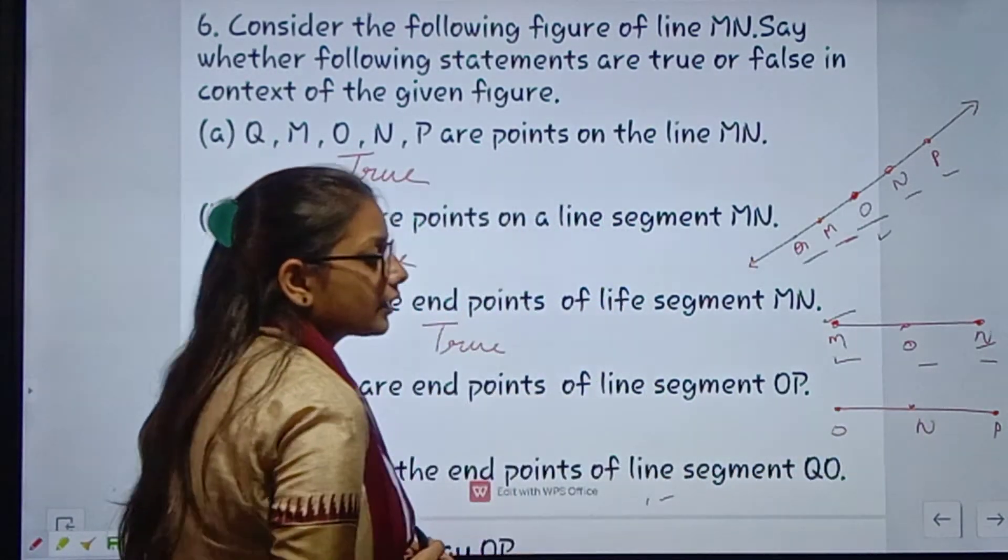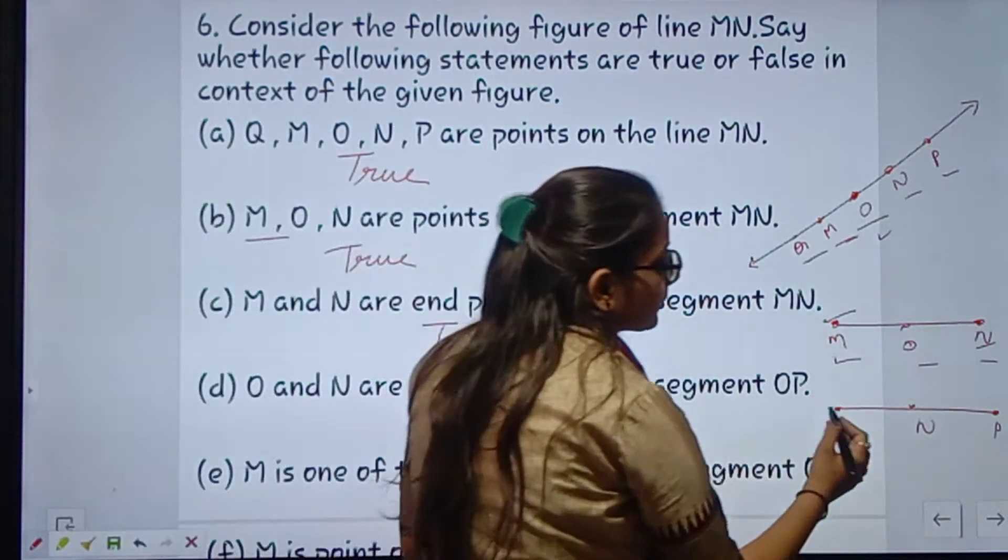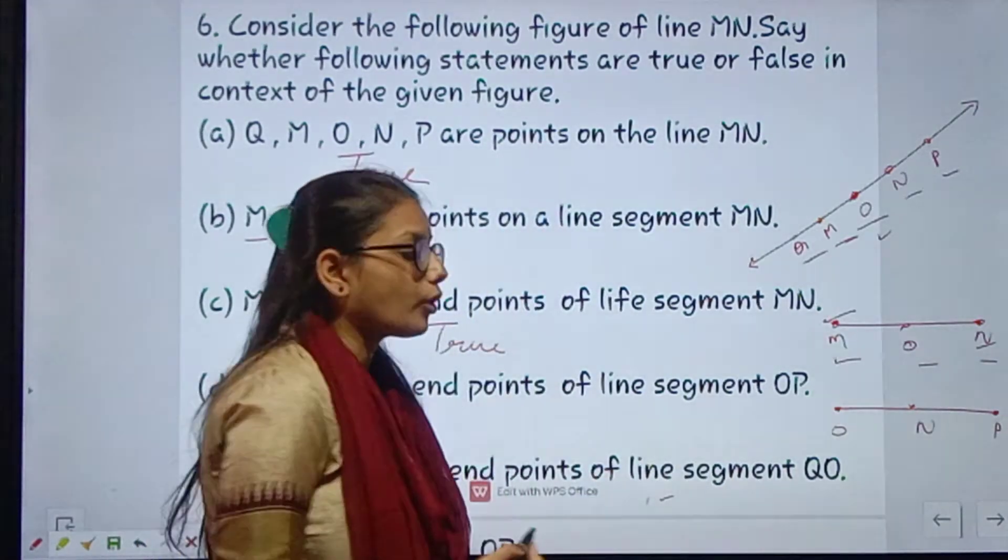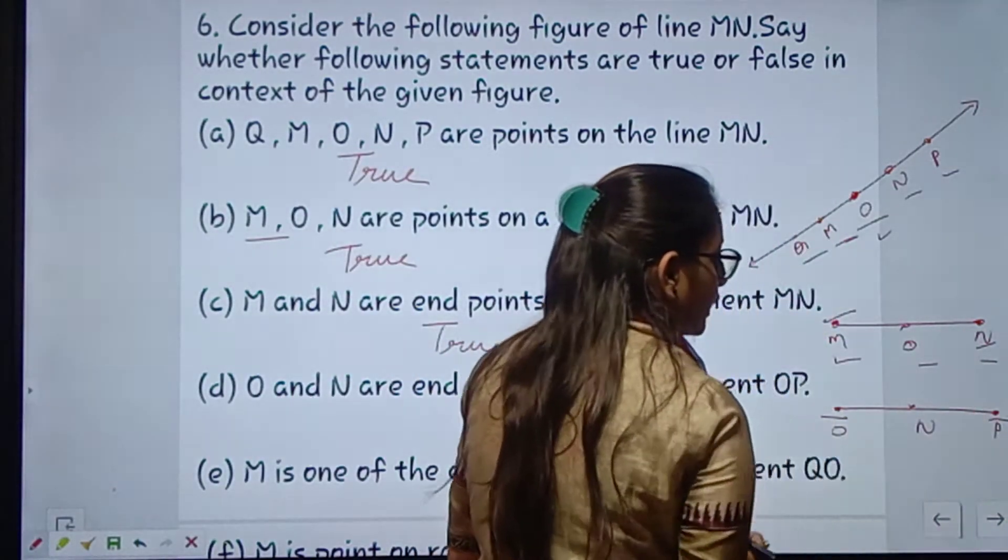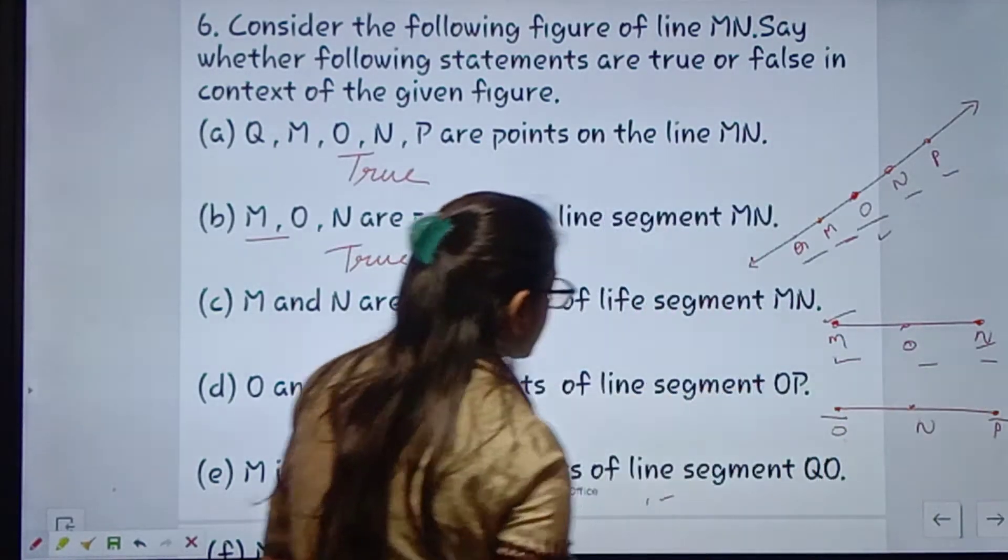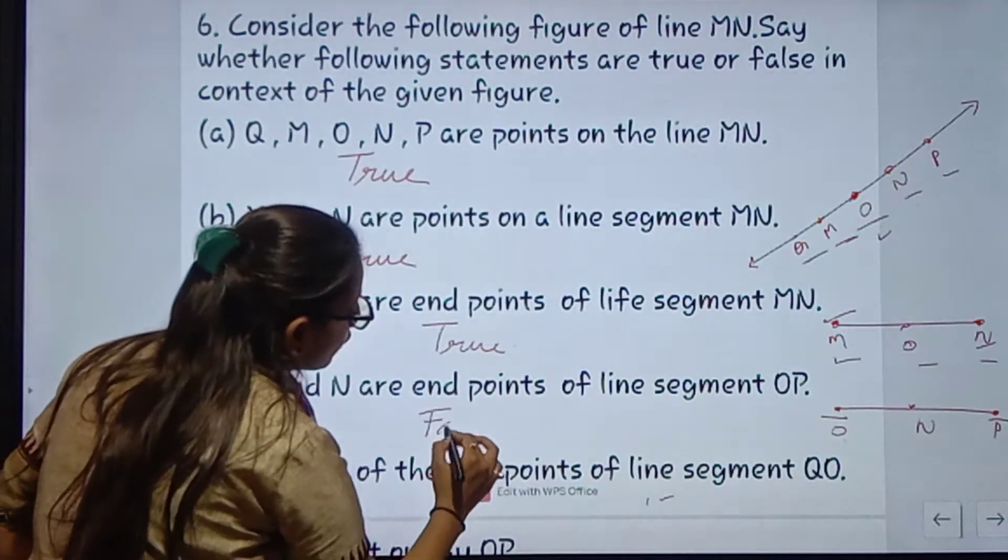O or N batana hai bita. Line segment ka point is starting point and ending point. So starting point is O and ending point is P. Toh yahan pe O or P hona chahiye, toh this statement is false.